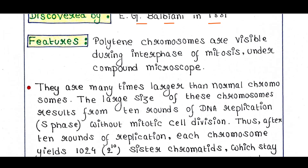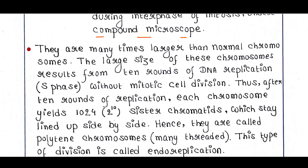Polytene chromosomes are visible during interphase of mitosis under a compound microscope, and they are many times larger than normal chromosomes — that's why they are called giant chromosomes. The large size results from 10 rounds of DNA replication without mitotic cell division. After 10 rounds of replication, each chromosome yields 1024 sister chromatids which stay lined up side by side. Hence, they are called polytene chromosomes, meaning many-threaded.